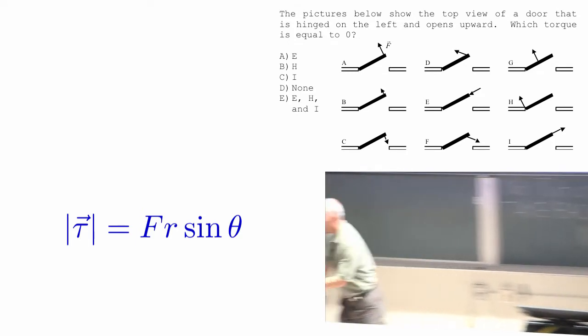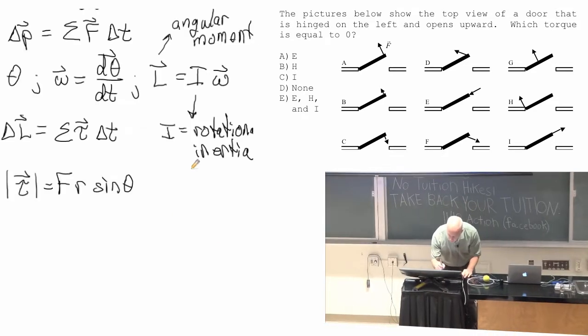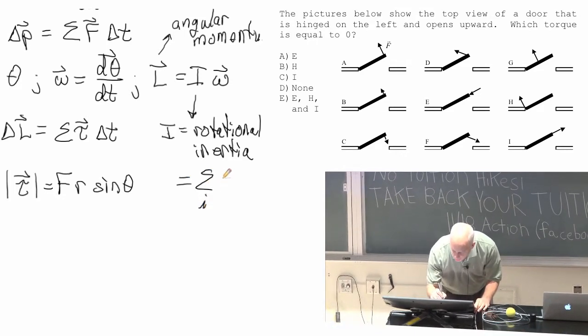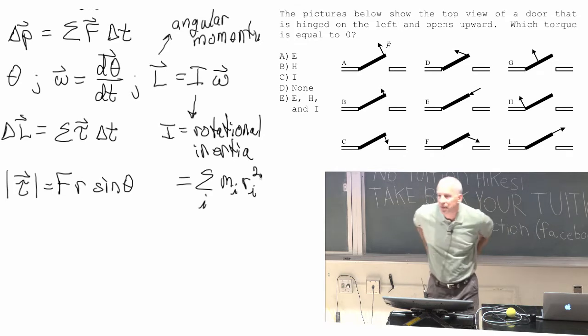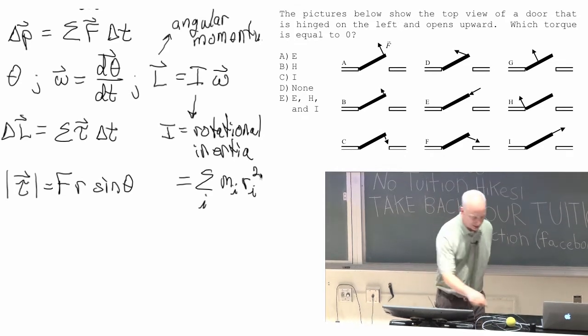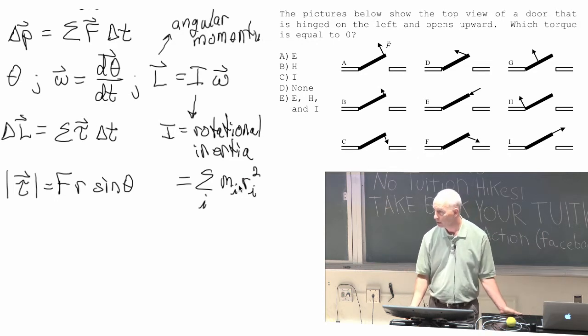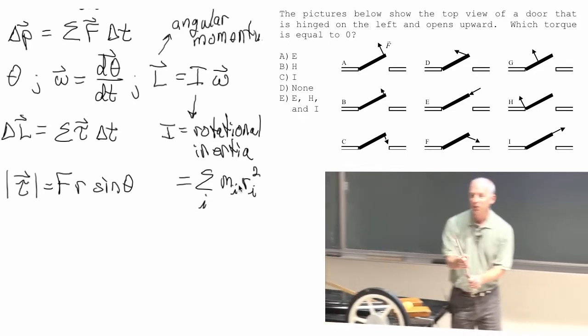As the mass gets farther from the axis of rotation, and maybe I'll just write it down. I is equal to the sum over all of the masses of the mass times the distance from the axis of rotation to the mass. R here in this formula is the distance from the axis of rotation to the mass. And so the rotational inertia depends on those distances, and it depends on the distance squared, actually. So it is true what you just said.